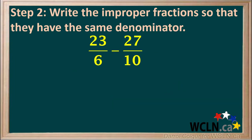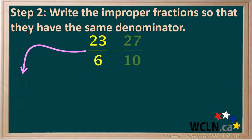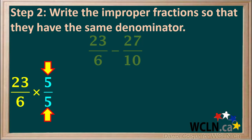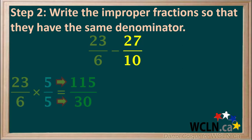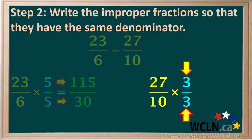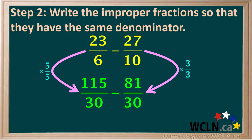Step 2 is to write the improper fractions so that they have the same denominator. The lowest common multiple of 6 and 10 is 30, so we need to write both fractions with a denominator of 30. We'll start with 23 over 6 and multiply both the numerator and denominator by 5, giving us 115 over 30. Then we take 27 tenths and multiply both the numerator and denominator by 3, giving us 81 over 30.